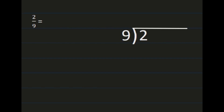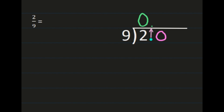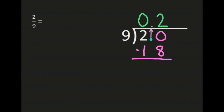We're going to divide the numerator by the denominator, which means your numerator of 2 needs to be on the inside and your denominator of 9 needs to be on the outside because you're dividing 2 by 9. Then you'll add the decimal point behind the 2 and bring it straight up so it's in the correct place in your answer. 2 divided by 9 is 0, so we'll place the 0 above the 2. Then we're going to need to add a 0 to our dividend, so we'll have 20 divided by 9. Now we're working behind the decimal point in our quotient. So 20 divided by 9 is 2. 2 times 9 is 18. And when we subtract, 20 minus 18 is 2.